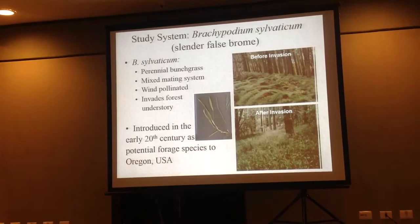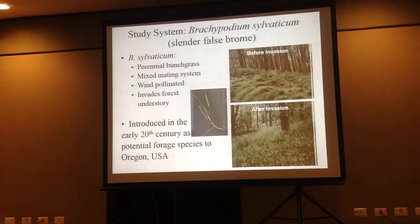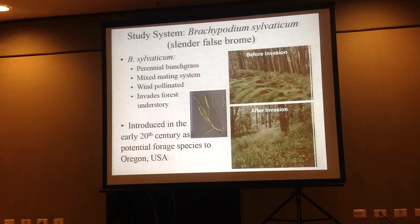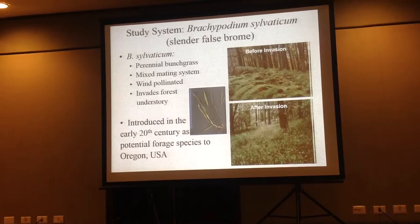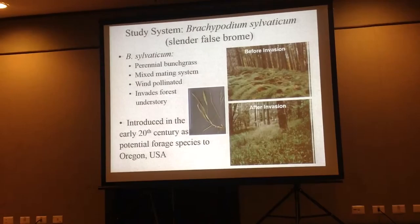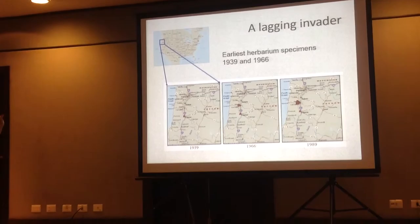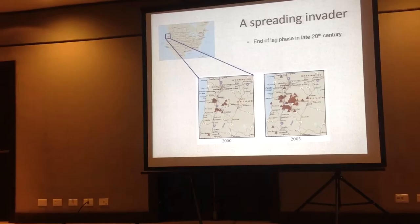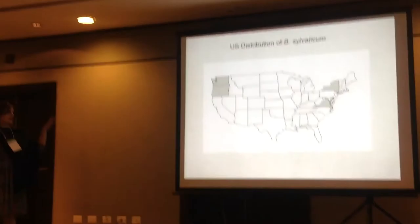Brachypodium sylvaticum is a perennial bunch grass with a mixed mating system. It's wind pollinated and invades forest understories of the Pacific Northwest U.S. Here's a picture of a forest prior to Brachypodium sylvaticum invasion — it's covered with sword ferns, kind of open ground. After invasion, the forest understory becomes a monoculture of Brachypodium sylvaticum plants, like a carpet of grasses, preventing other species from establishing. It was introduced in the early 20th century as a potential forage species for cattle to Oregon.